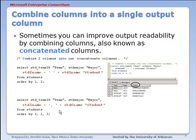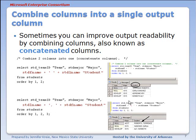In this variation I've flipped it around and put student last name first in the concatenated column. I've added a comma and a space before listing the first name. And I'm doing a sort by 1, 2, 3 so it'll sort by team, major, and then by last name. And so we see that output.